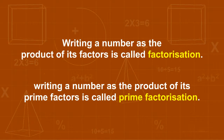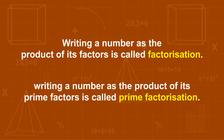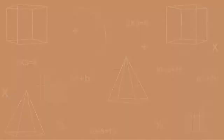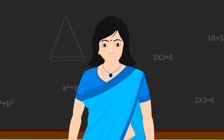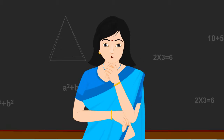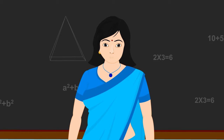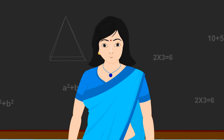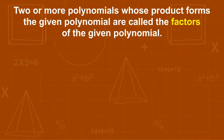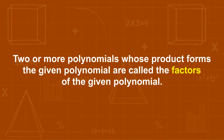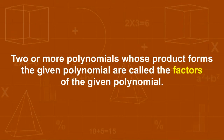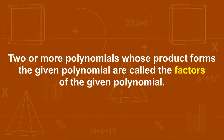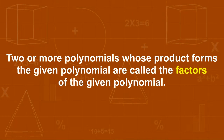In this chapter, we will learn about factors. The method of expressing a given polynomial as the product of two or more polynomials is called factorization. Two or more polynomials whose product forms the given polynomial are called the factors of the given polynomial.